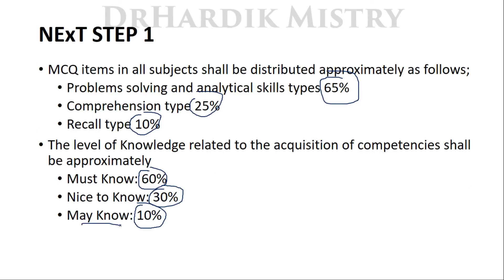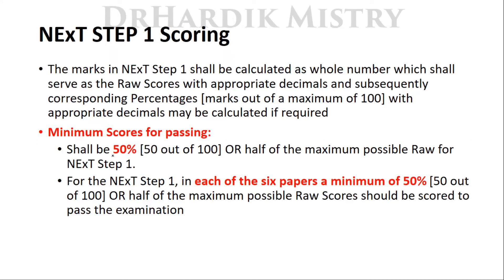For NExT Step 1, you are required to score 50% or half of the maximum possible raw marks. For example, for a paper of 120 marks you need 60 marks to pass. In each of the six papers, a minimum of 50% — or half of the maximum possible raw score — must be scored to pass the examination.